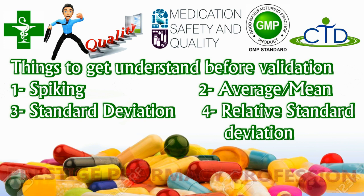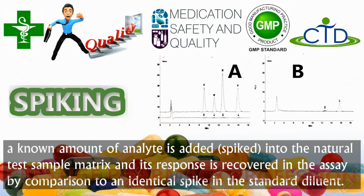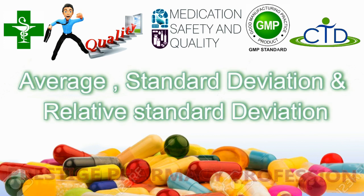Spiking of analyte is used in circumstances where the amount of analyte is very low in the solution to be injected into HPLC, because the peak obtained in the chromatogram may be too small to give an accurate reading. Diagram B on screen represents the natural peak of the analyte before spiking, whereas diagram A represents the sample after addition of a known amount of analyte to the testing sample.